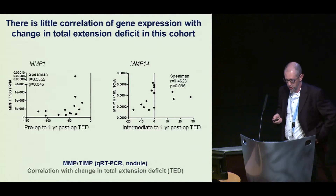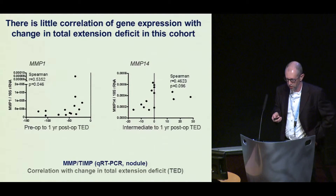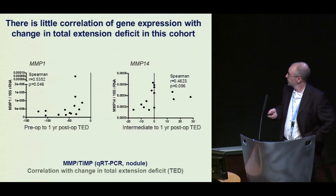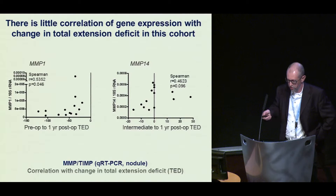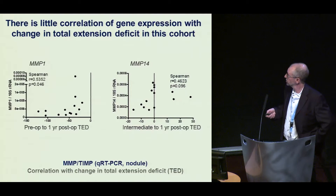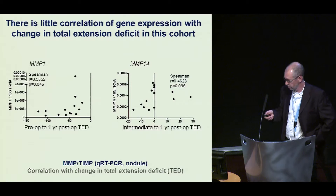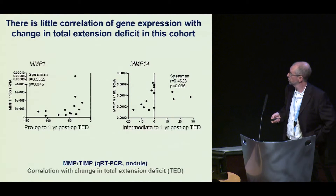We don't see as much correlation between gene expression and the change in total extension deficit as we saw previously, but there are some MMPs for which that still holds true.